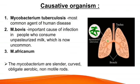Causative organism: TB is mainly caused by Mycobacterium tuberculosis, which is the most common agent of human disease. Mycobacterium bovis is an important cause of infection in people who consume unpasteurized milk, which is now uncommon. And Mycobacterium africanum. These Mycobacteria are slender, curved, obligate, aerobic and non-motile rods.